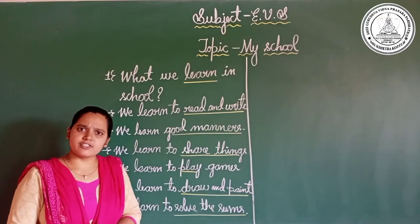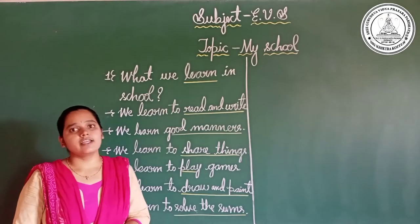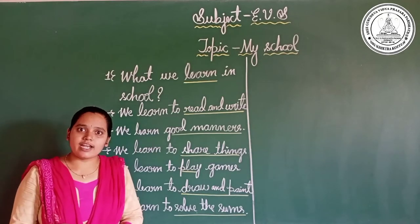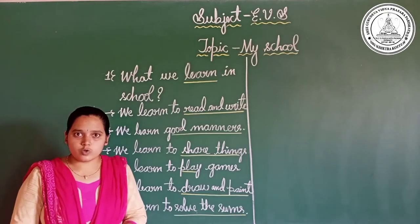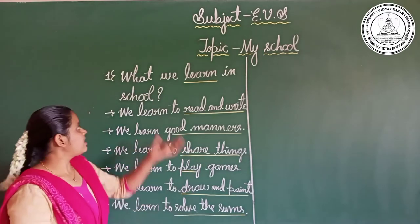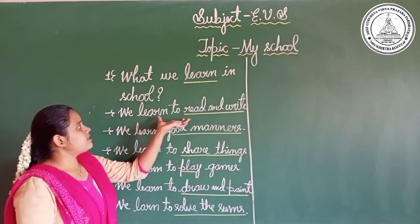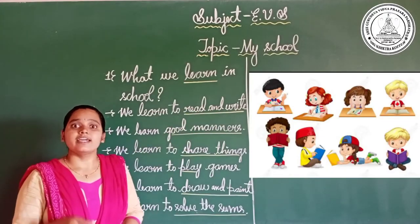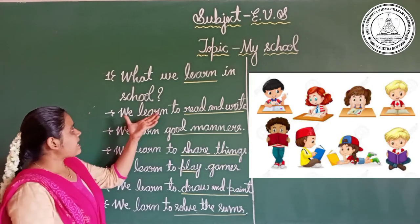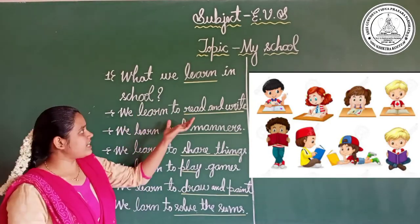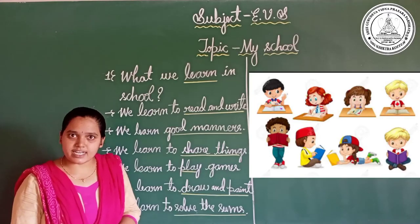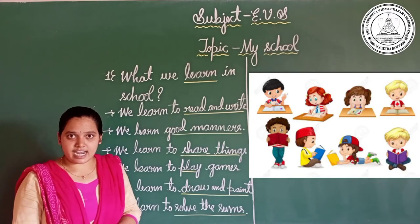What are all the things we can learn in the school? Students come to school to learn different things, like Alok and his friends. What do Alok and his friends learn in school? We learn to read and write. You are learning reading and writing in the school itself. Teachers will teach you how to read and write the lessons.